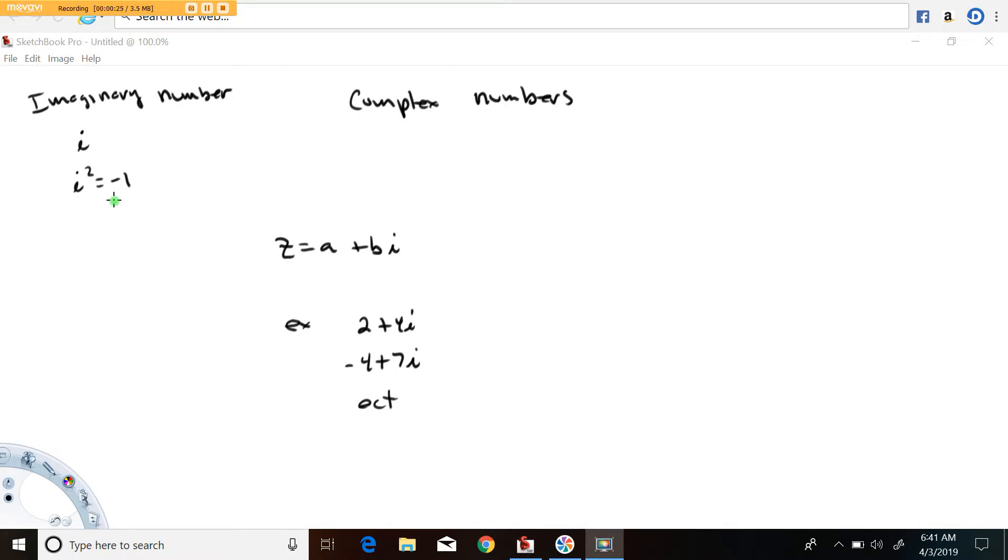When you're dealing in algebra with the real number system, equations like x squared equals negative one or x squared equals negative four, we say have no solution to them. Well, in truth, they have no real solution.